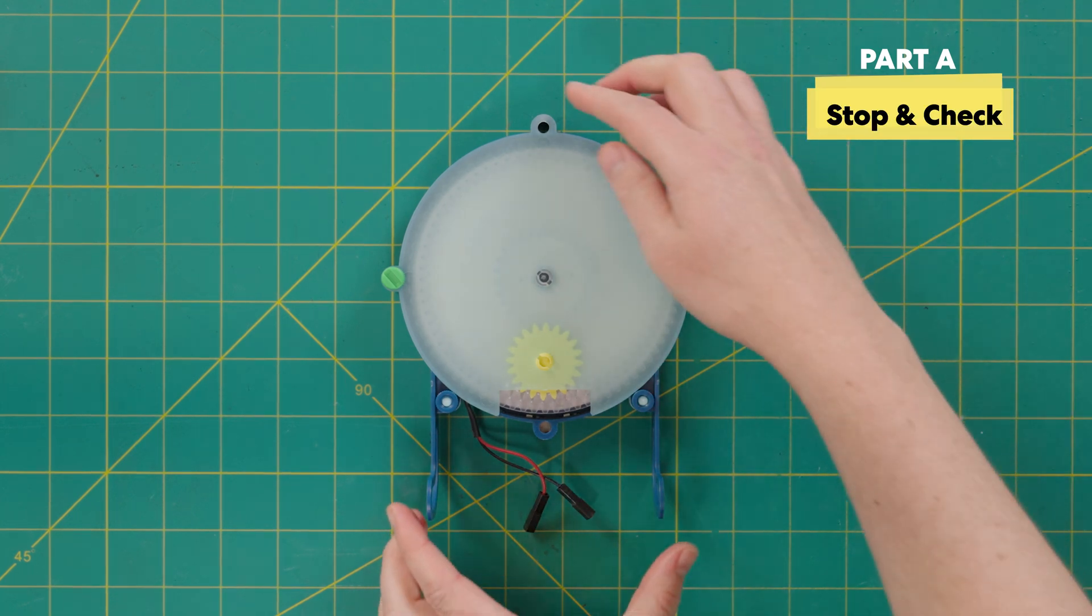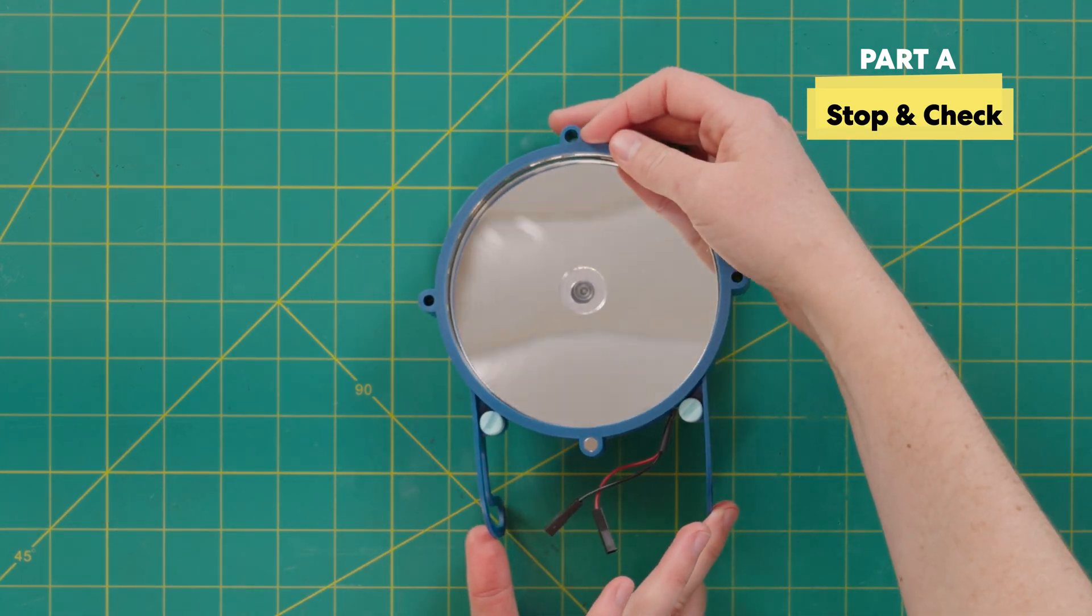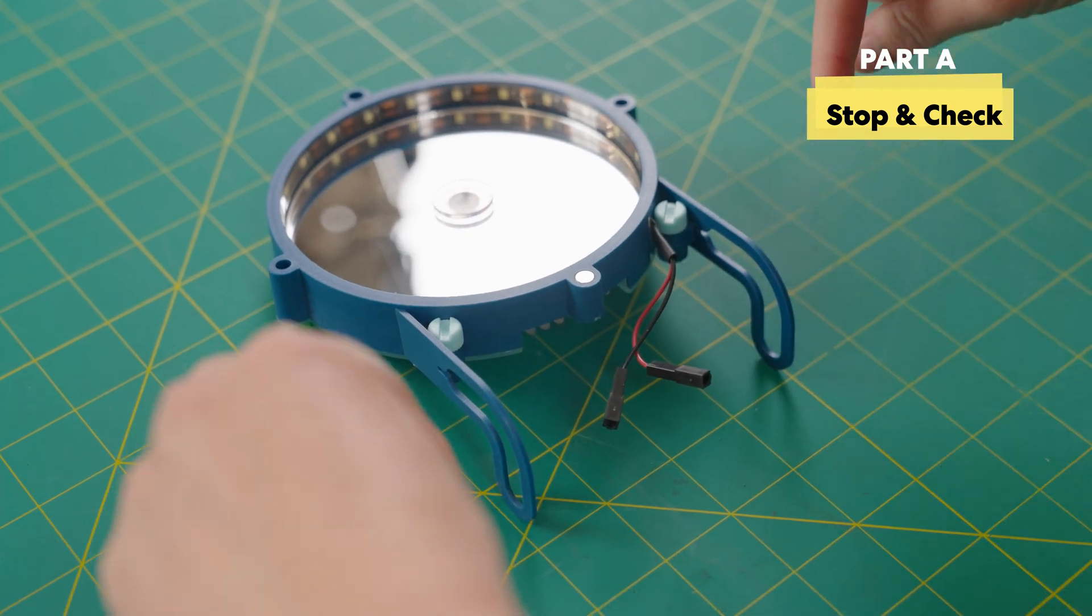Now repeat step five on the other side. Making sure we grab this L-shaped leg. Putting it on the side. Screwing the screw in from the top just like how we did before. And just when it's starting to get tight. And flip it over and add a nut on the back. Another stop and check.